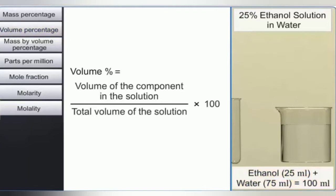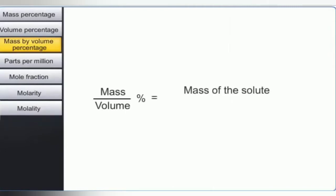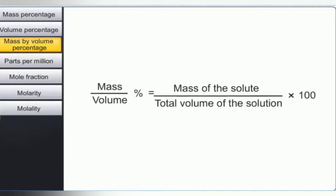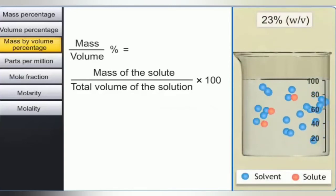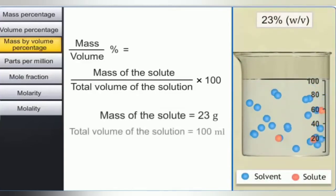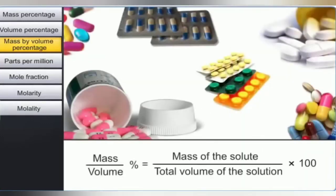Another way of expressing concentration in percentage is mass by volume percentage. This is expressed as the mass of the solute divided by the total volume of the solution, multiplied by 100. For example, a 23% weight by volume solution contains 23 grams of solute per 100 mL of solution. This method is widely used in medicine and pharmacy.